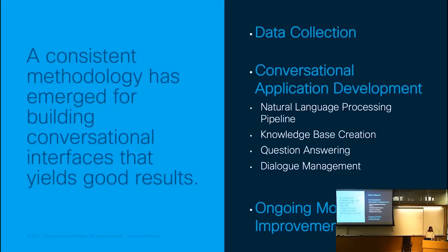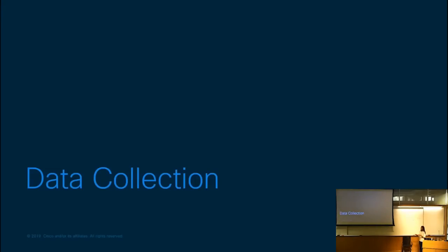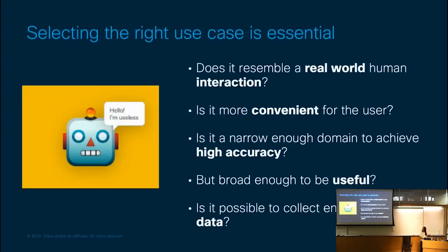With the first step of data collection, the first thing to think about is selecting the right use case. As you narrow down the domain of your use case, you can achieve higher accuracy more easily because you can focus on domain-specific knowledge and vocabulary. However, you also need your use case to be broad enough that it's useful to the user and simulates a real-world human interaction. Selecting the right use case means finding cases that are both high accuracy and have a strong value proposition.